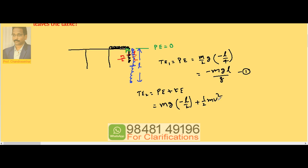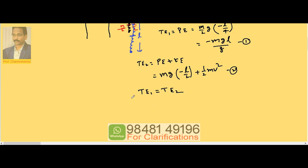According to law of conservation of energy, TE₁ must be equal to TE₂. Now TE₁: minus mgl by 8. TE₂: minus mgl by 2 plus half mv².